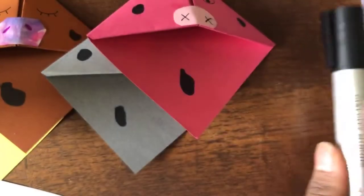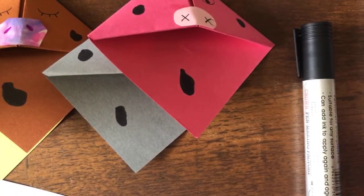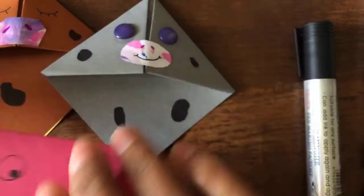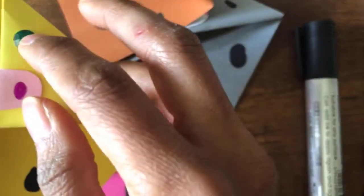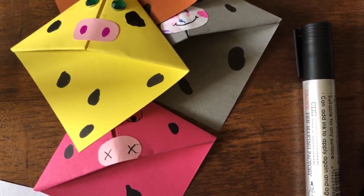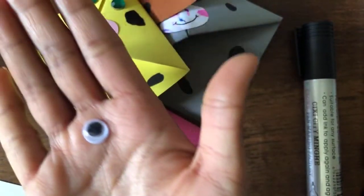You need markers, a glue or a glue stick, and you need scissors and additional materials like for example buttons, gemstones, and also the wobbly eyes if you have those.